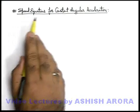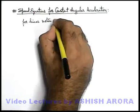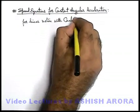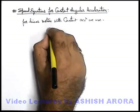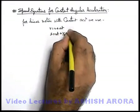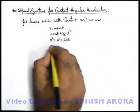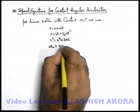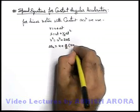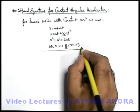Now we'll study the speed equations for constant angular acceleration. As we know, for linear motion with constant acceleration, we use various speed equations like: v = u + at; s = ut + ½at²; v² = u² + 2as; and displacement in the n-th second: Δsₙ = u + (a/2)·(2n − 1). These are the speed equations we use for constant acceleration in linear motion.